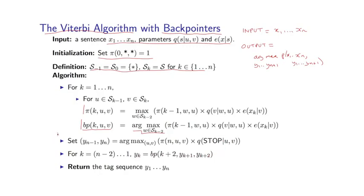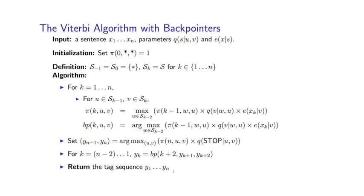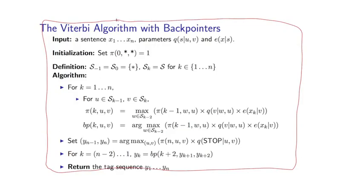This is just unraveling the argmaxes to find the highest scoring tag sequence, and that's what we finally return. So that is it. This is the full Viterbi algorithm, which now makes use of back pointers to actually recover the highest probability sequence for an input x1 through xn.